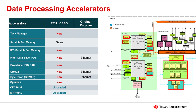The PRU ICSSG supports a wide variety of data processing accelerators. The functionality of these accelerators ranges from managing system events to providing fast memory access and performing data translations, to calculating CRCs. The PRU ICSSG is the next generation subsystem to the PRU ICSS, building on its features and capabilities. The table on this slide lists the data processing accelerators available on PRU ICSSG and shows which are new or upgraded compared to the previous PRU ICSS. A few accelerators were specifically created to assist with industrial Ethernet applications, although they can also be leveraged for general purpose applications.